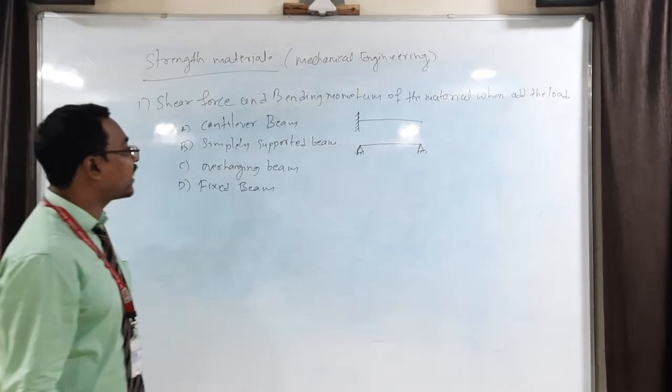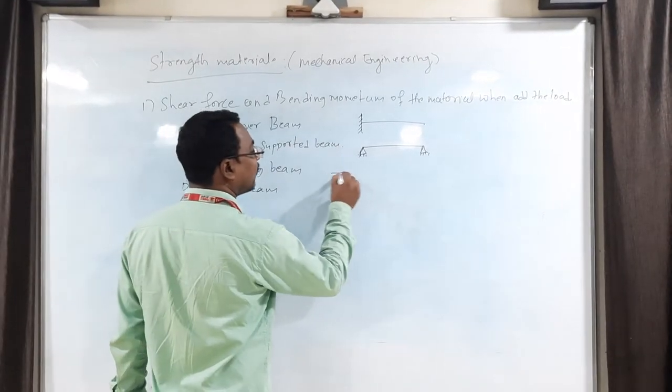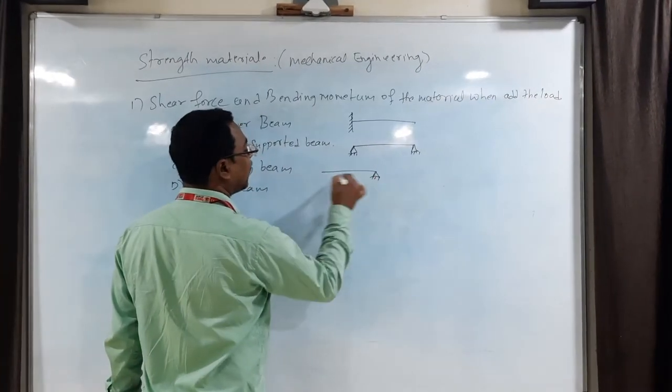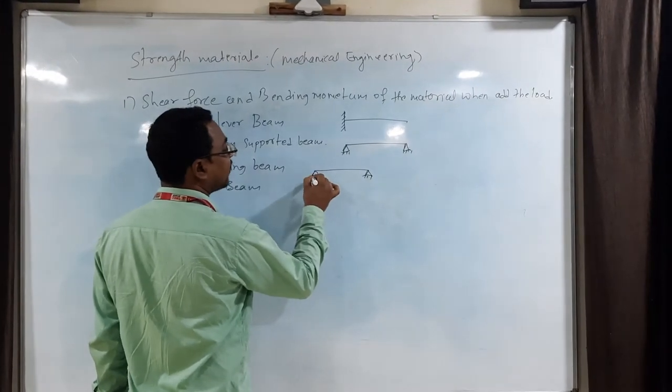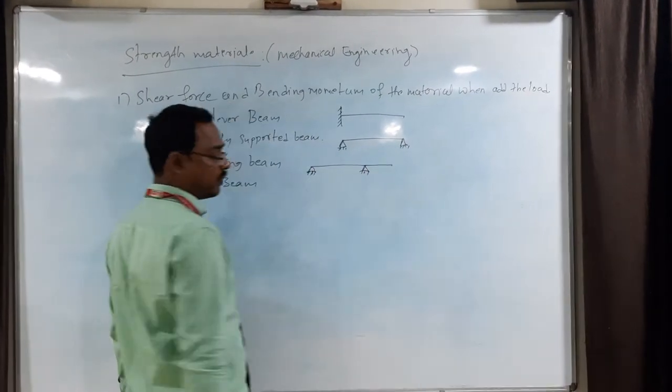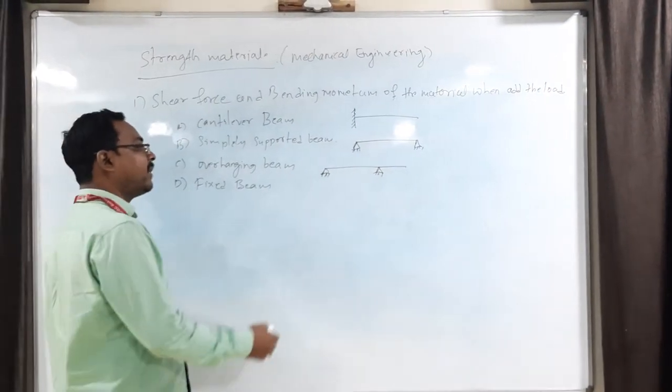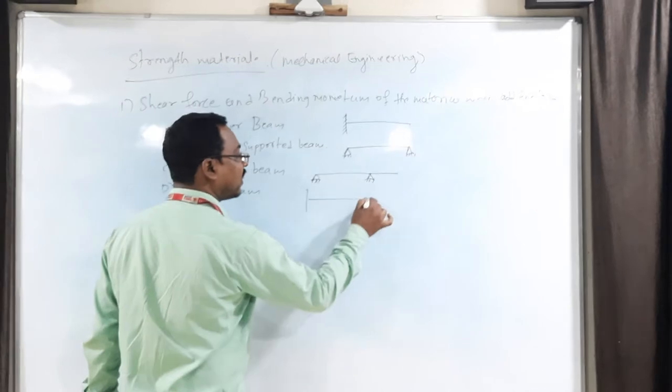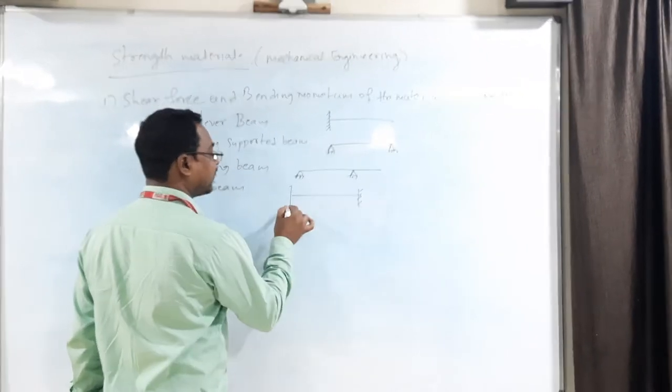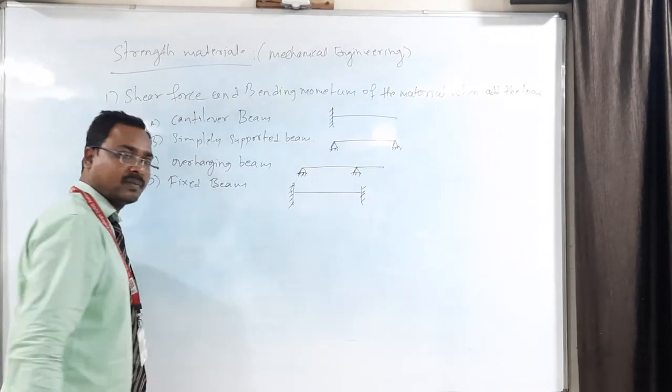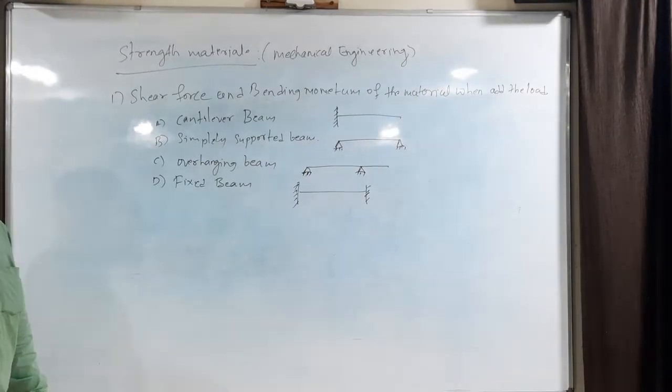If overhanging beam is the beam, we have two supports, but it is extended from one side. Same way, the fixed beam means the both ends of the beam is fixed. These are the types of beams.